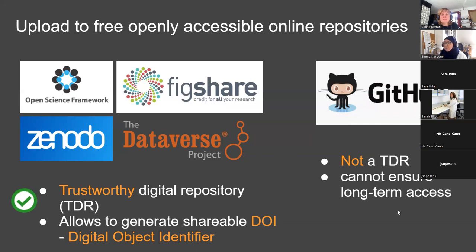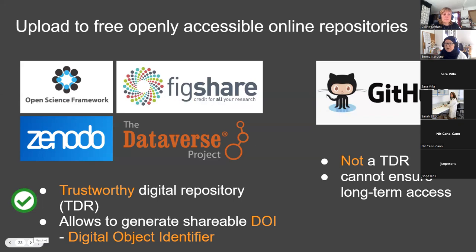GitHub doesn't give you a DOI and things on GitHub change. When you archive something on one of these TDR repositories, it is a static thing — it doesn't change. You can upload another version and get a separate DOI, but under your existing DOI that cannot change; it's completely fixed. Whereas on GitHub, the web address for your repository — you're still working on it so the content just continually changes. That's another reason why you need to be archiving your work through long-term repositories.